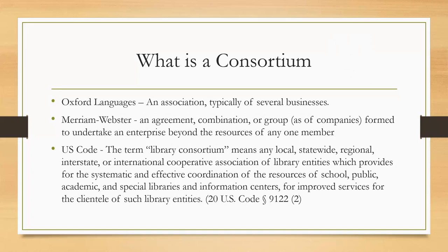There is actually a definition in US code about what a library consortium is: any local, statewide, regional, interstate, or international cooperative association of library entities which provides for the systematic and effective coordination of the resources of school, public, academic, and special libraries and information centers for improved services for the clientele of such library entities. You've got to hand it to the government — they are very good at verbiage. Basically cutting through all of those words, a library consortium is a group of libraries that work together to improve services for their patron base.